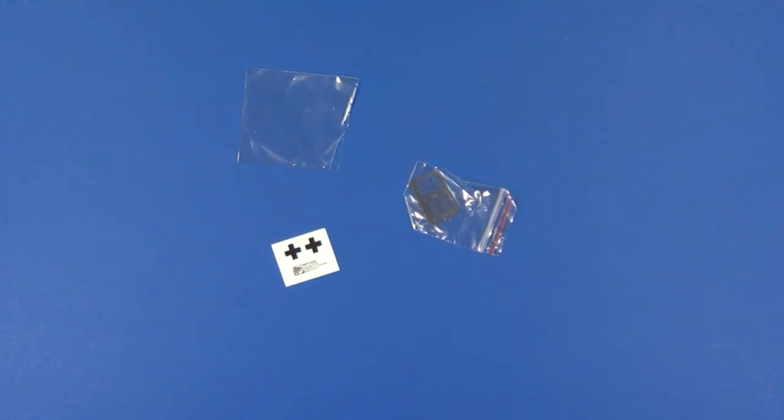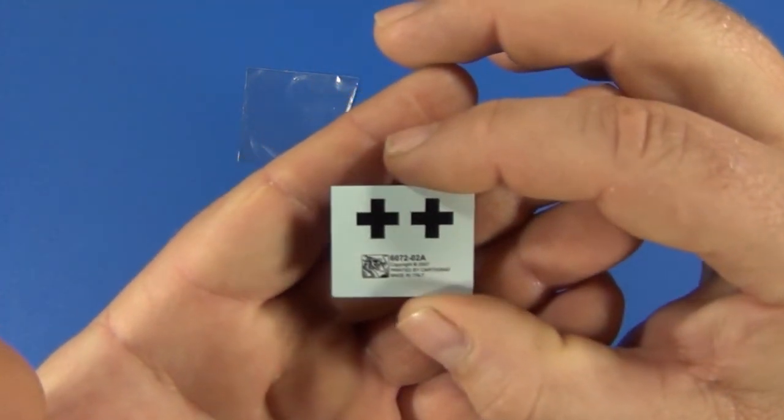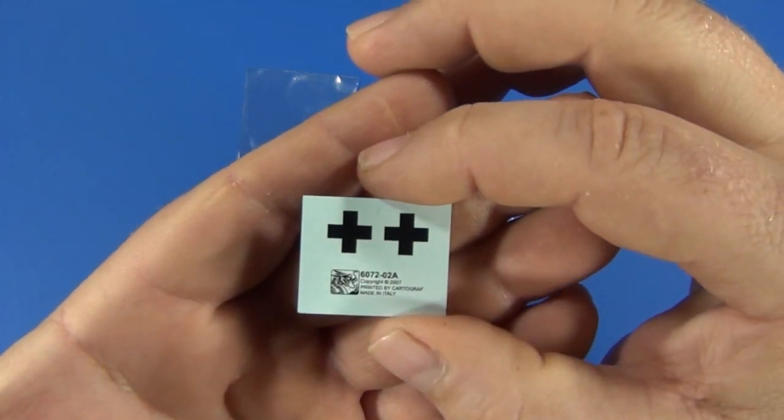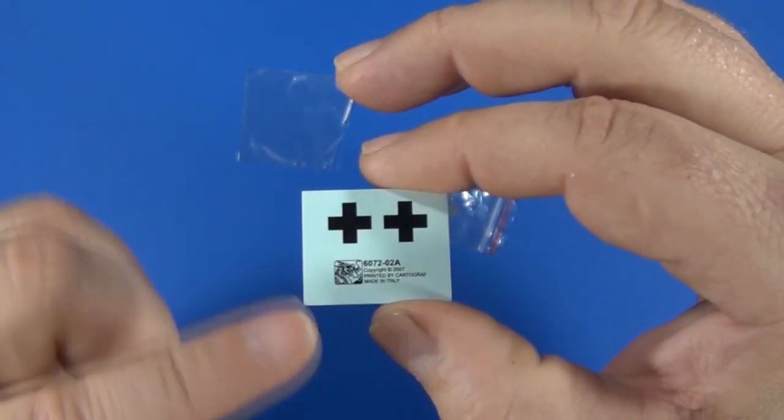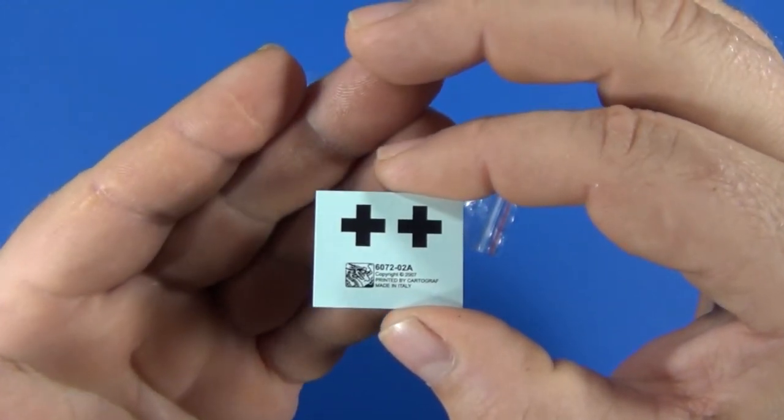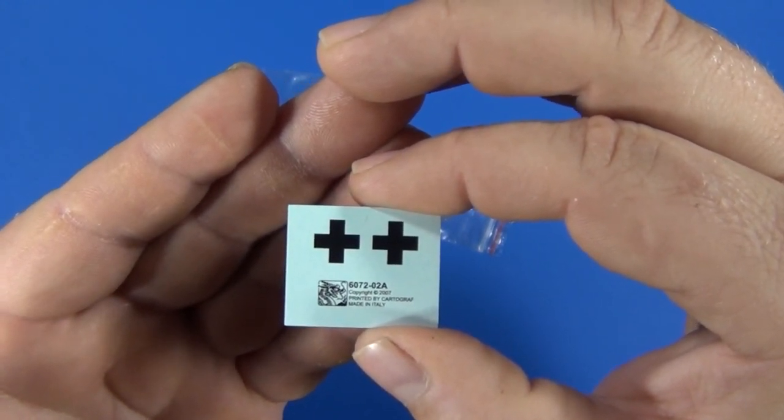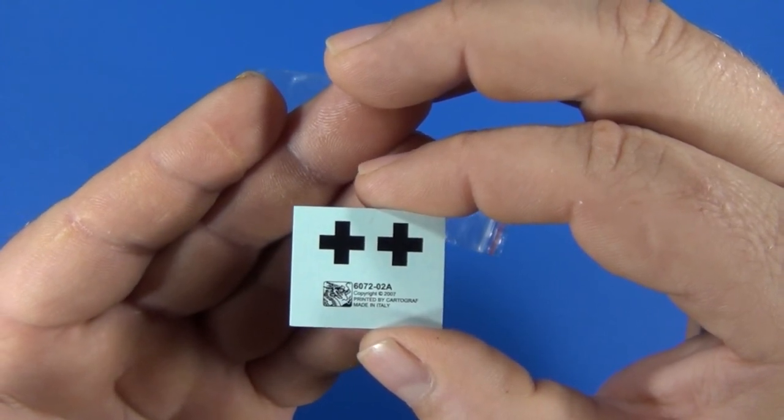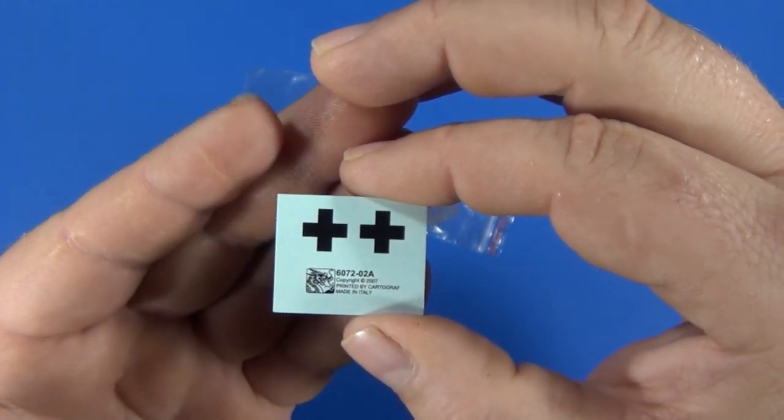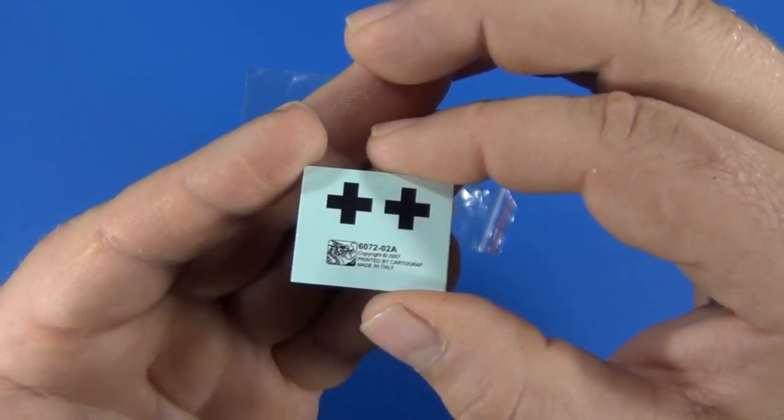Lastly, the decal sheet and photo etch fret. All the decal sheet comprises of is the two black crosses. It looks like this is all one piece, so you'll need to take your hobby knife or scissors to separate the two crosses before you put them on your model. I think I'm just going to make my own masks and airbrush them on, so I won't even use these.